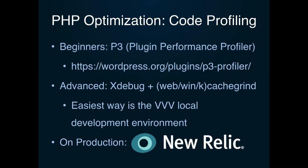The other thing you need to look at is the PHP chunk of the page load generation time. One of the most important things is optimizing the PHP code that's running. For beginners, there's a cool plugin called P3 that lets you see how much resources each plugin is consuming — so you can say, this plugin is a hog, I don't need it, I'll get rid of it. If you're more advanced, you can use Xdebug and analyze the cache grind files to actually profile the code and say, this function is bad, this loop is running too many times. And on a production site getting a lot of traffic, New Relic is an awesome paid service that does wonders helping you analyze and profile your PHP code.